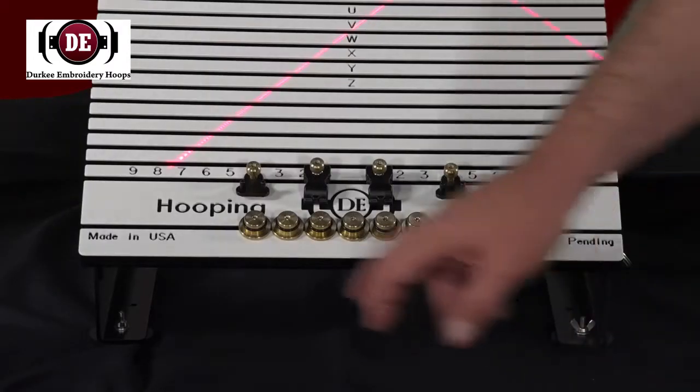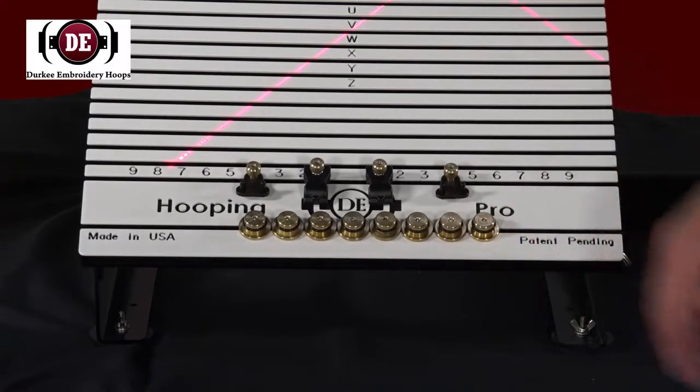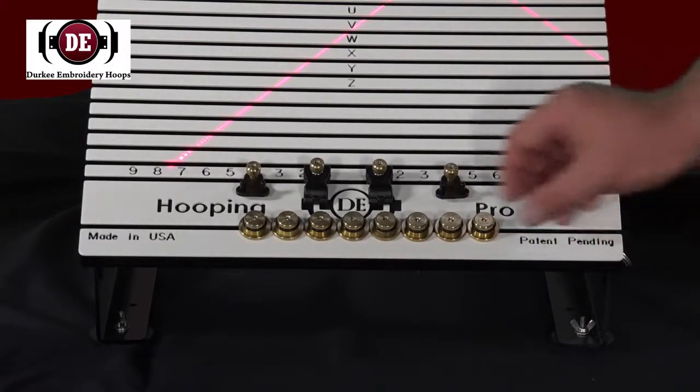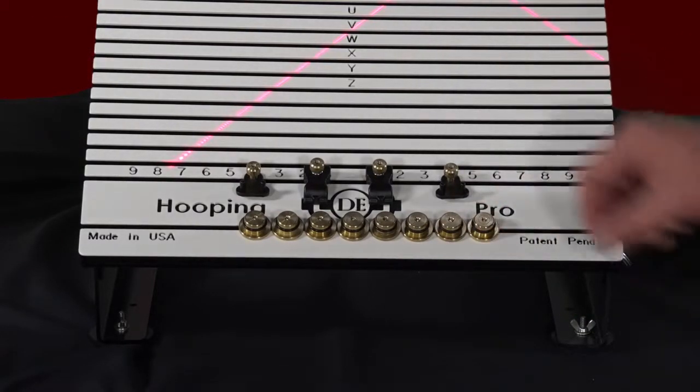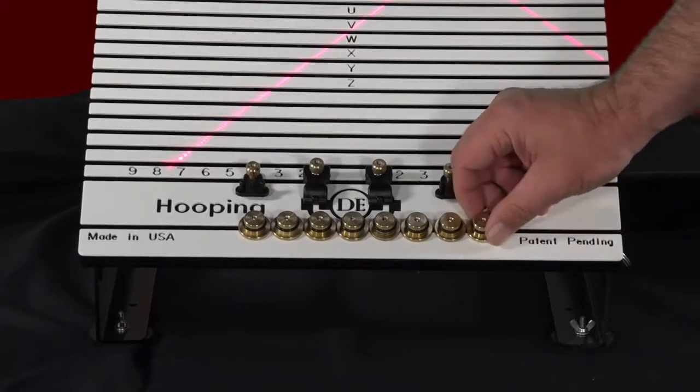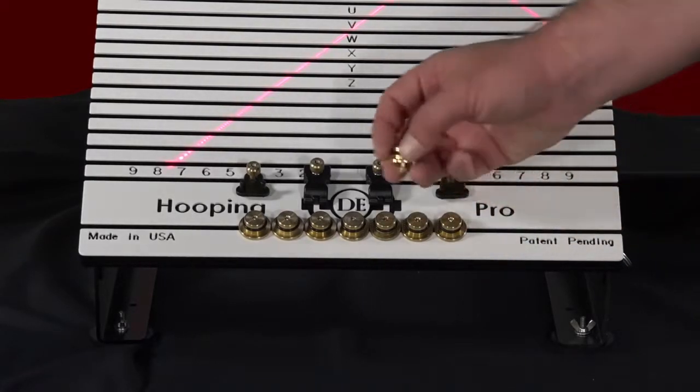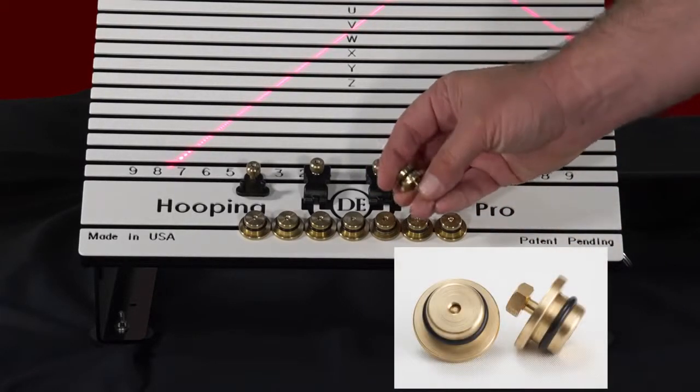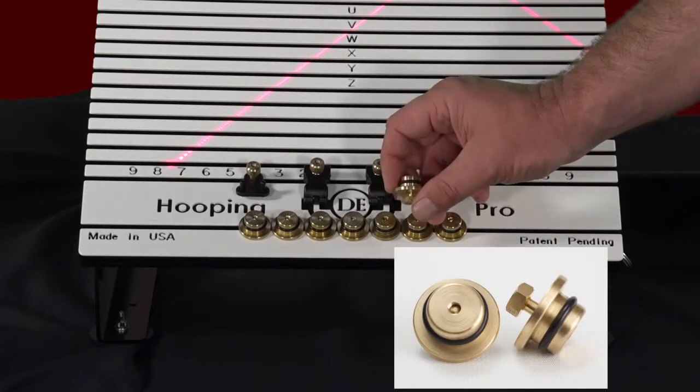Your Hooping Pro station comes with eight solid brass bumper stops. To remove, you simply turn slightly to the left like you're loosening a screw and you would slide off and be able to move into any position on the slot.